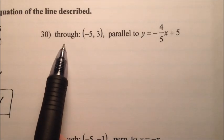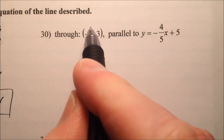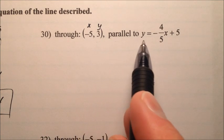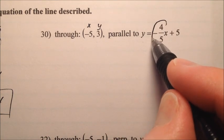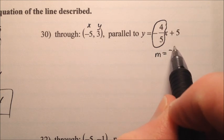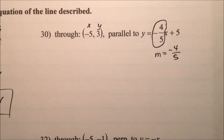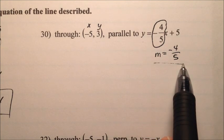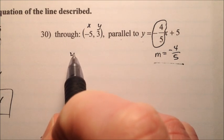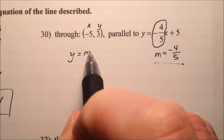In number 30, we know that it goes through this point right there, so we have an x and a y we can use, and it's parallel to this line. So we're going to grab that slope, and we know the slope is negative 4 fifths, so we can use that same slope because if they're parallel, they have the same slope, and then we can use those new points for the x and y.